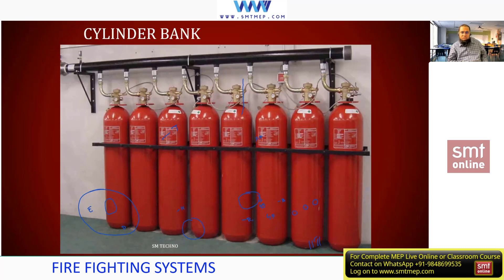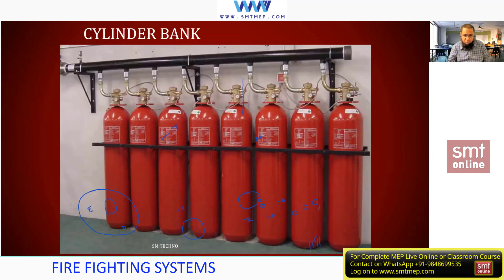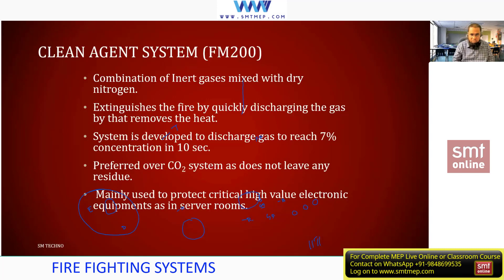An important point about CO2: it cannot be used in occupied areas. It can be used in unoccupied areas like battery rooms or equipment rooms without any occupants, because it is toxic. Regarding the use in server rooms: if there are no occupants, or if there is a separate alarm so occupants can evacuate, then yes. For occupied spaces, we use FM200 or other clean agents. CO2 controls fire by increasing CO2 concentration, which decreases oxygen and reduces combustion. The basics of the fire triangle will be discussed later.